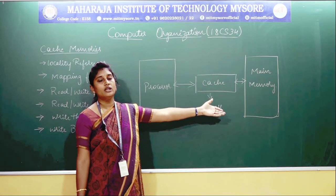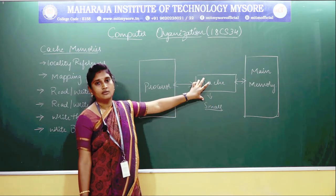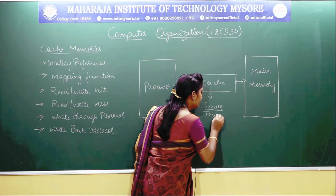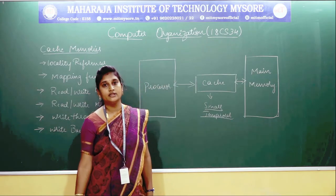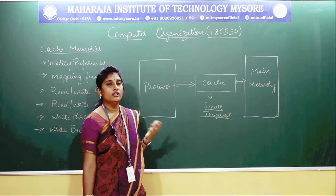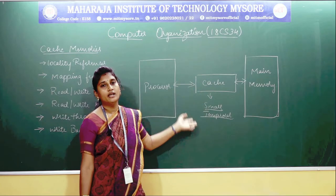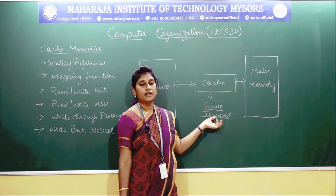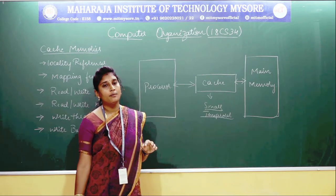Whatever data you store in the main memory, you cannot fit all the data contents into your cache memory because it is smaller and also it is temporal storage. Whatever data you store in cache will not be stored permanently — it might be erased after some time, or when the cache is full, you might be replacing the data with another data. That is why it is called temporal storage.